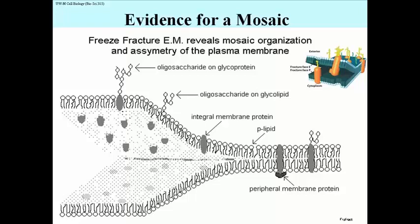This freeze-fracture electron microscopy confirms that proteins are indeed embedded in the phospholipid bilayer — not merely sitting on either side interacting with the phosphate heads, but actually spanning all the way through. All the proteins shown here, with one exception called the peripheral membrane protein, are transmembrane or integral membrane proteins. The oligosaccharides and glycoside-linked sugars on glycoproteins and glycolipids must be on the outside of the cell.